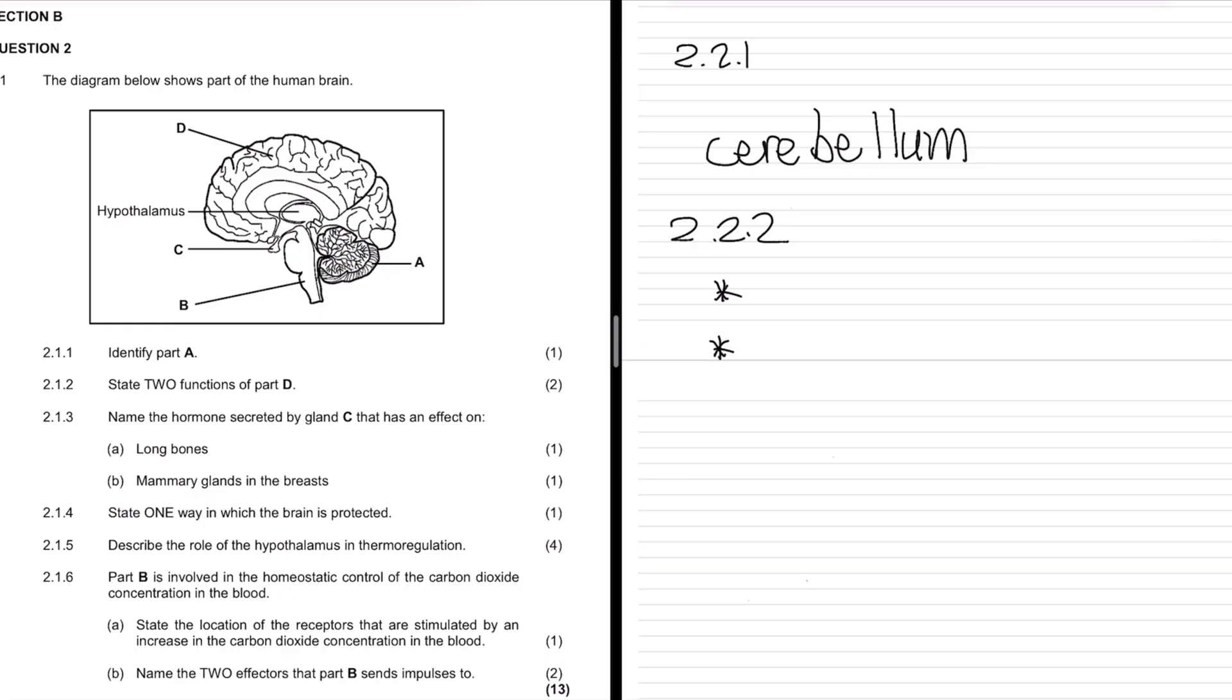Movements are towards the back, more towards the front are sensors. Optical vision is towards the back. They asked for only two functions.